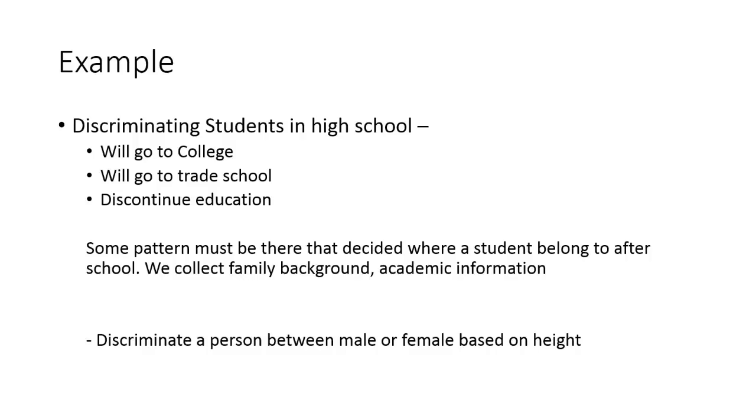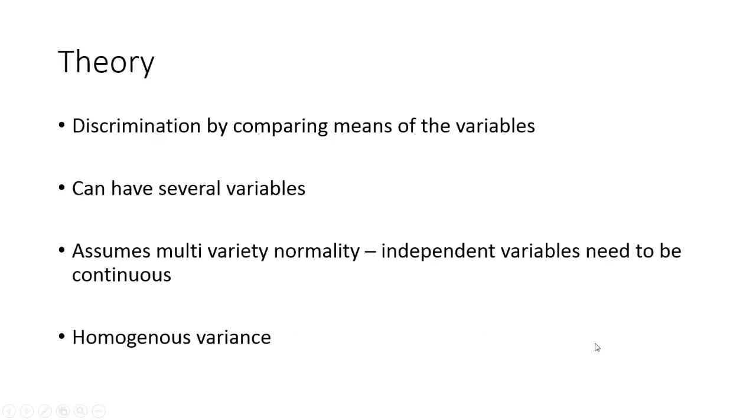Height is one variable that discriminates between the categories male and female. We can have several variables. We can combine them and then use them to discriminate two categories. That's how we use discriminant analysis. As I said, discriminant analysis is done by comparing the means of the variables. We take several independent variables and then we see whether there is a difference in the mean for different categories. Like in the previous example, the mean height of male and female population is different. So height is one variable that explains the difference between the two categories. Similarly, we can have several such variables which explain the difference. And then we can club them and combine them in some way to come up with a score that discriminates between two categories.